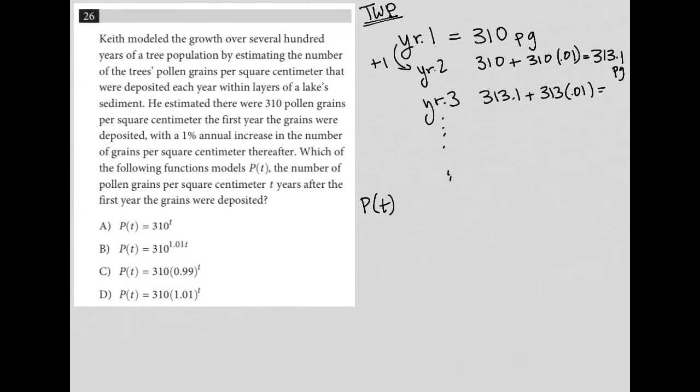And we want to see what equation down here actually represents that. I'm going to use this year two data. So again, year two is really when T equals one because it's one year after that first year. So what does that mean to me? That means that P of one, I expect to equal 313.1.